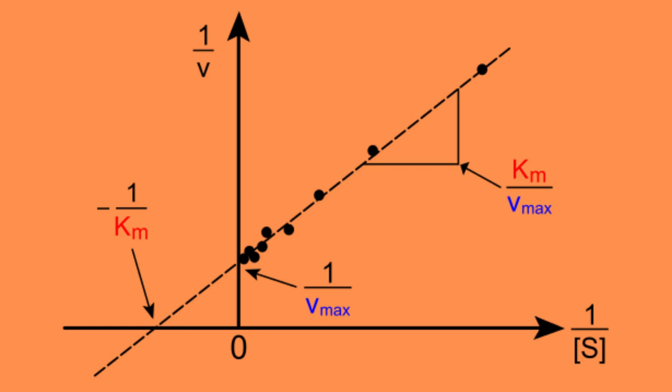With that in mind, it becomes easy to draw the Lineweaver-Burk plot for non-competitive inhibition, where the y-axis is 1 over the rate of the reaction and the x-axis is 1 over the substrate concentration.